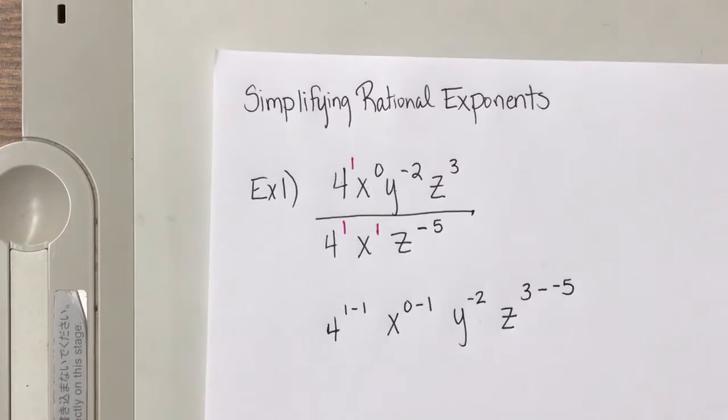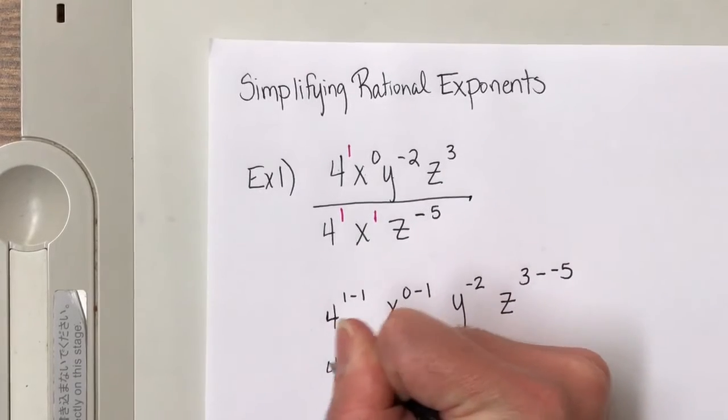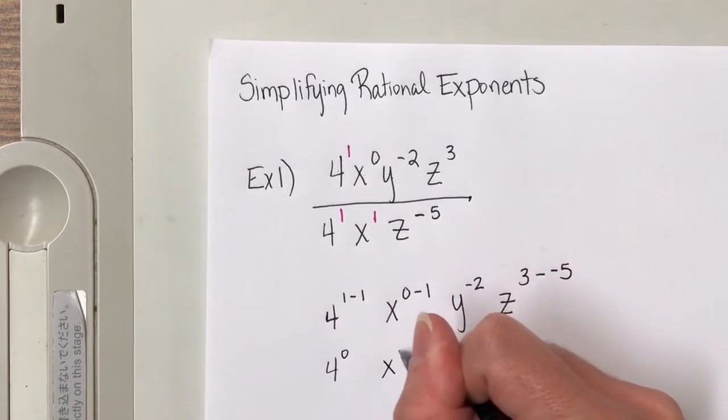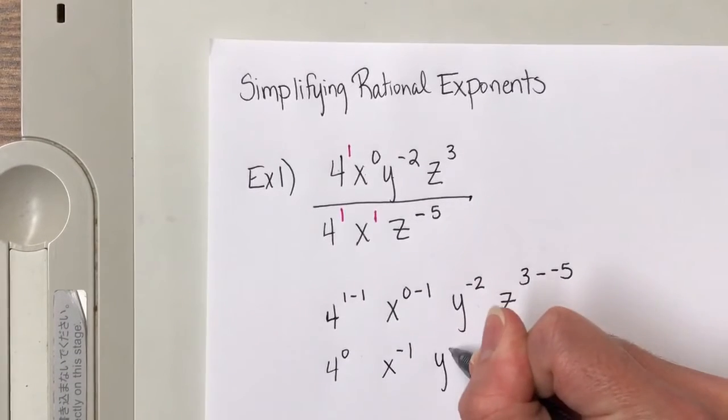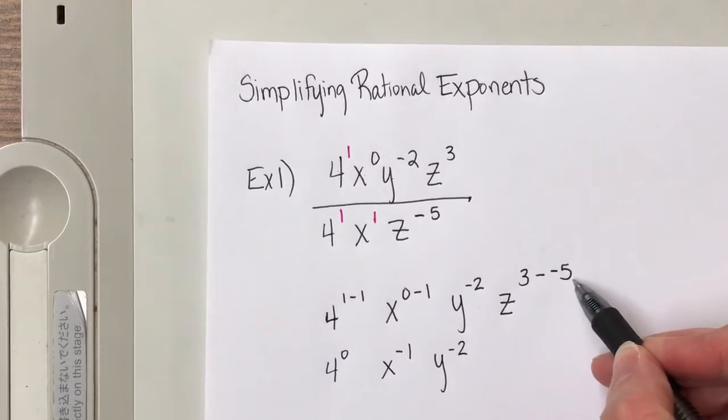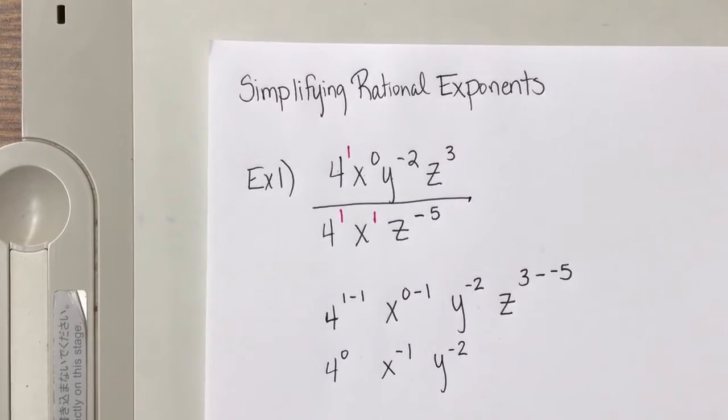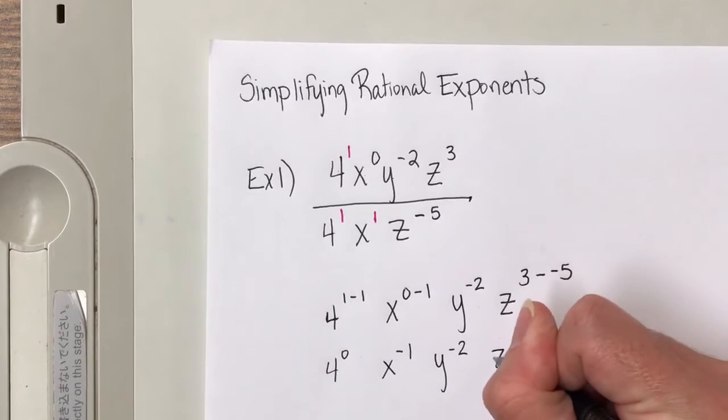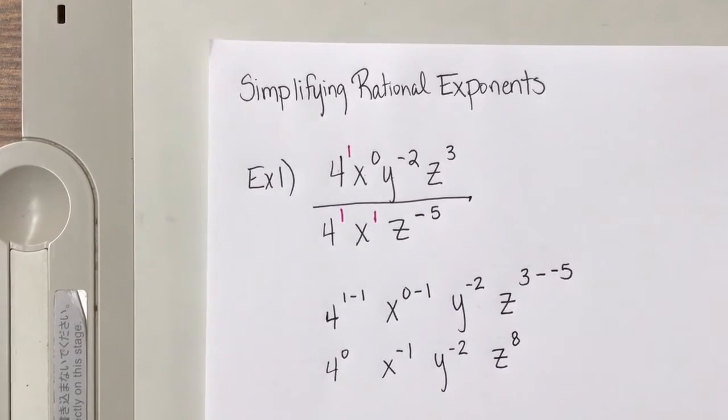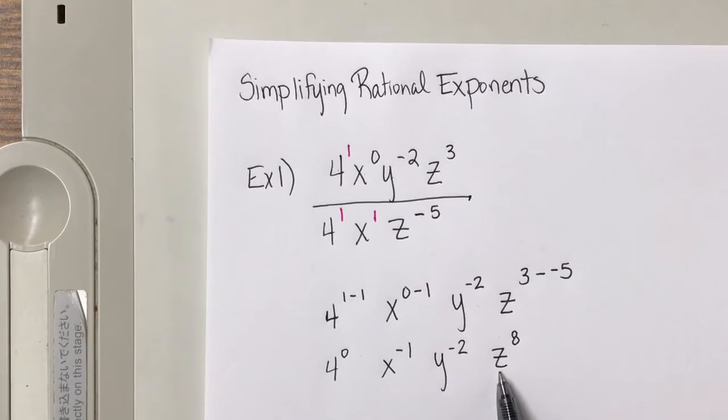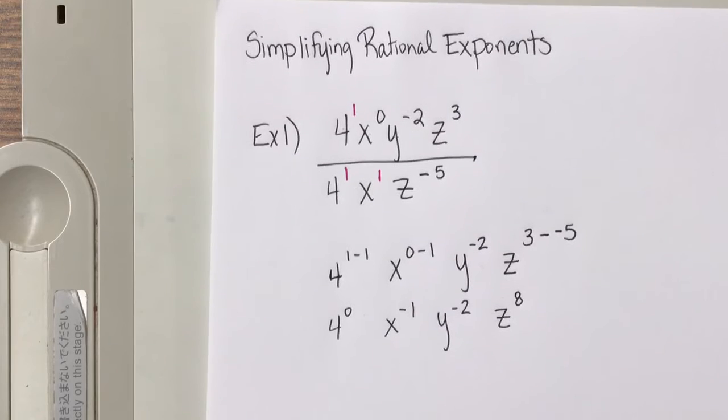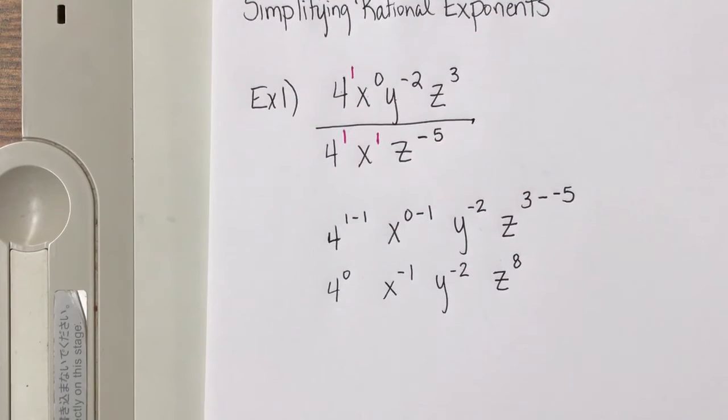Now let's simplify. So 1 minus 1 is 0. 0 minus 1 is negative 1. Then y to the negative 2. And then 3 minus negative 5 is the same thing as saying 3 plus positive 5, so this becomes z to the positive 8. So now I see my base of 4, my base of x, my base of y, and my base of z. I see where I only have the base appear once. So ask yourself, is this simplified? And the answer is no.